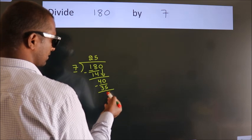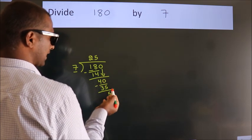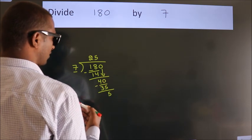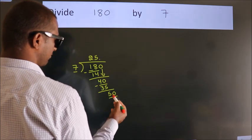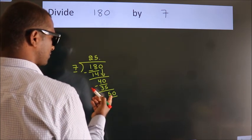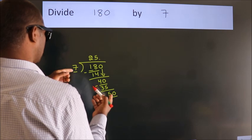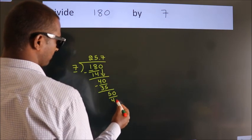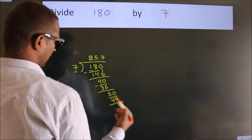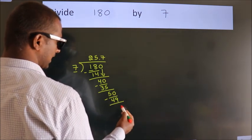After this, no more numbers to bring down. So what we do is we put a dot, take 0. So 50. A number close to 50 in the 7 table is 7 sevens, 49. Now we subtract. We get 1.